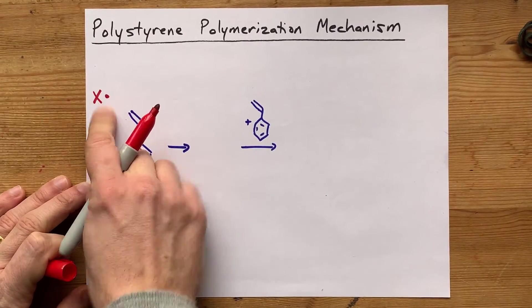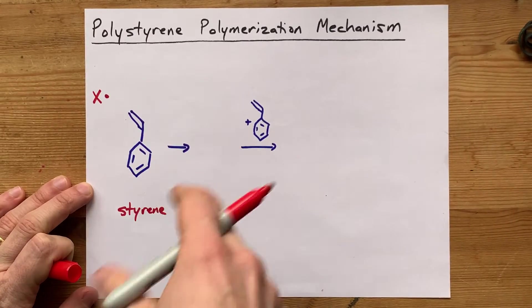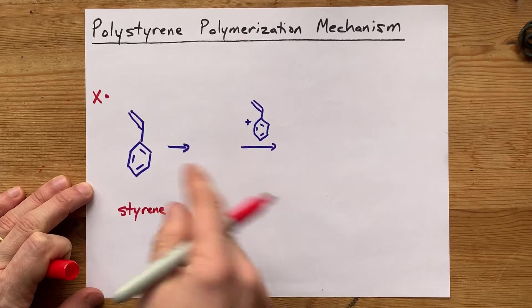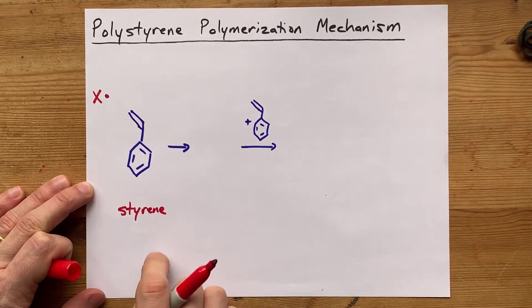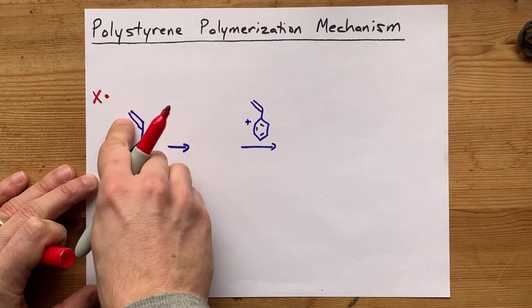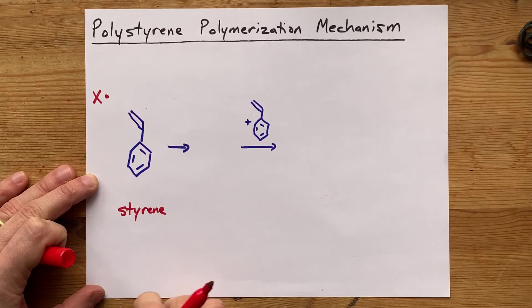Now, that free radical, that unpaired electron wants to be paired with something. And the pi bond, the second of the two bonds in between these two atoms, is just weak enough that it will break apart to help that free radical pair.